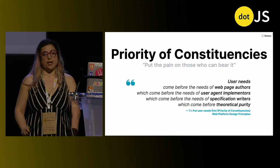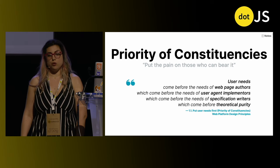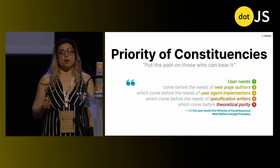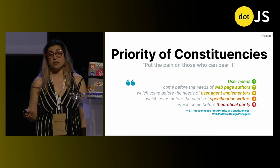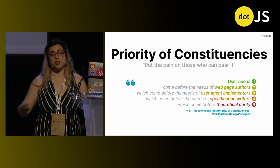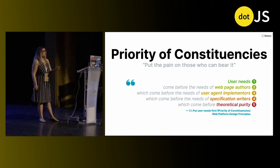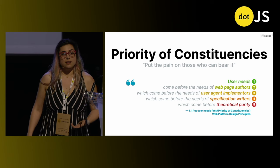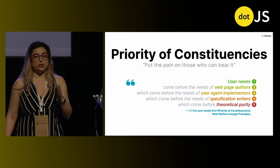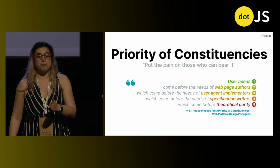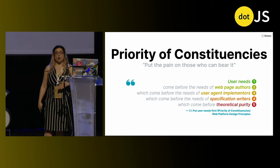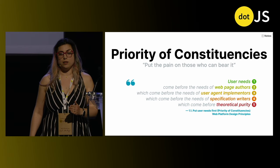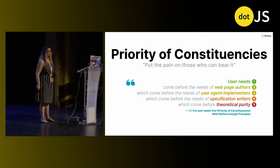A good way to ensure complexity is encapsulated is to have a priority of constituencies. For the web platform it looks like this: end users are above web developers, who are above browser developers, who are above spec writers, and all of these are above theoretical purity. As someone designing APIs, this means your needs as authors are above my needs as a spec writer. The main idea is: prioritize users over implementers at every level, and prioritize every human over theoretical purity. Put the pain on those who can bear it.